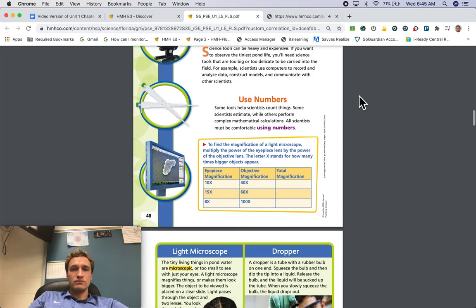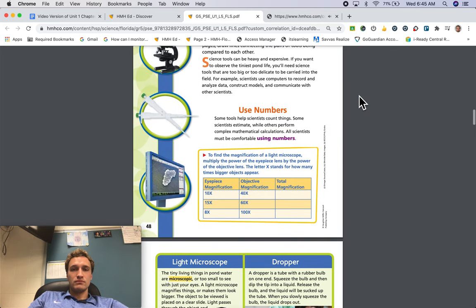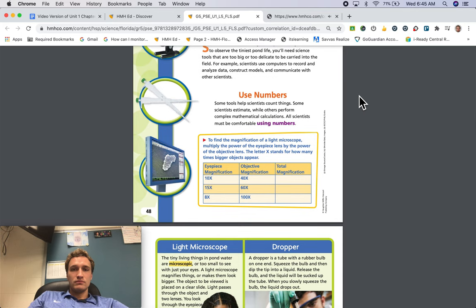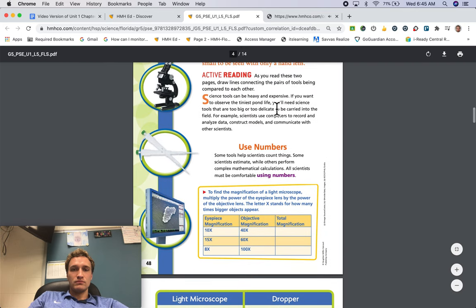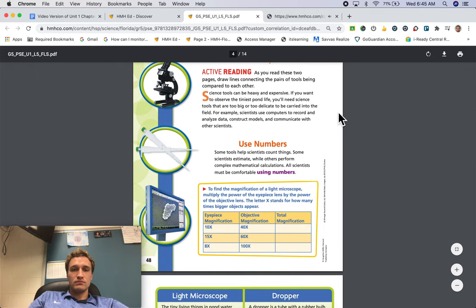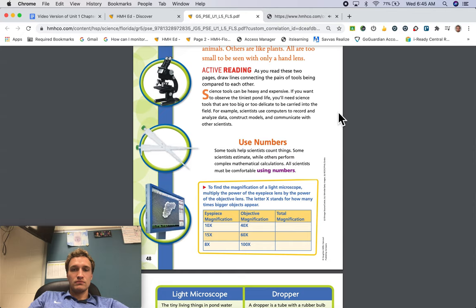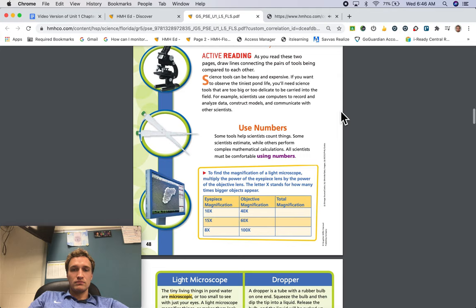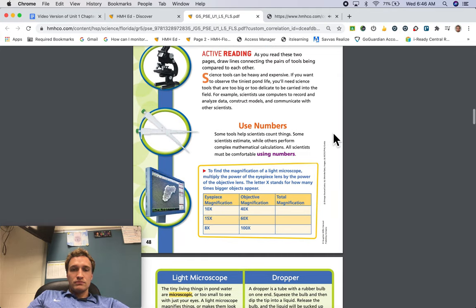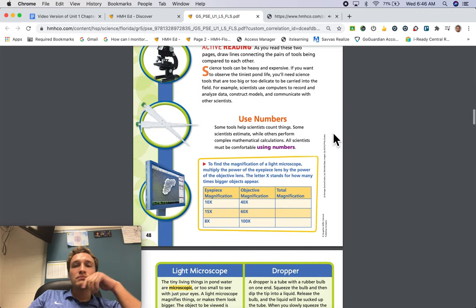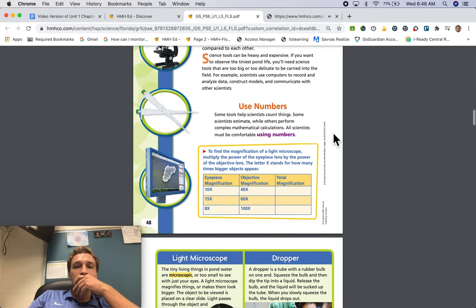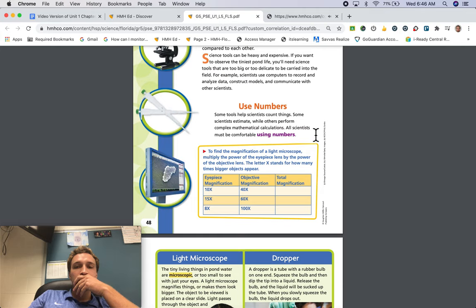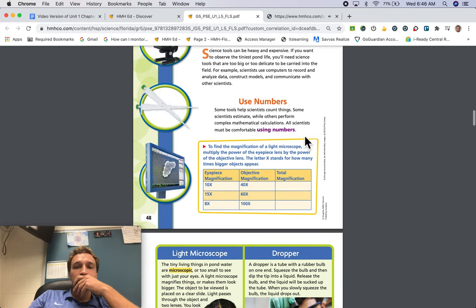Science tools can be heavy and expensive. If you want to observe the tiniest pond life, you'll need science tools that are too big or too delicate to be carried into the field. For example, scientists use computers to record and analyze data, construct models, and communicate with other scientists. Use numbers. Some tools help scientists count things. Some scientists estimate, while others perform complex mathematical calculations. All scientists must be comfortable using numbers.